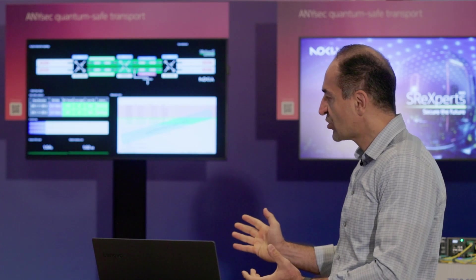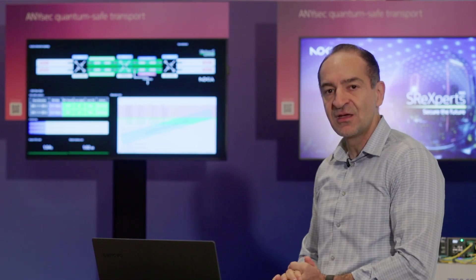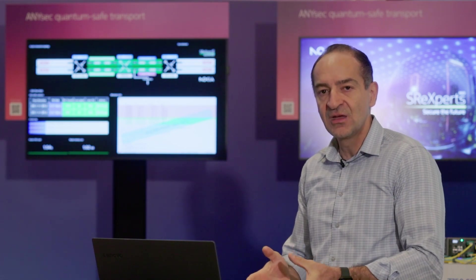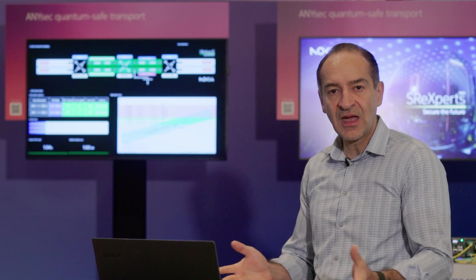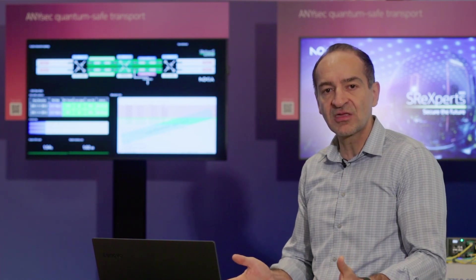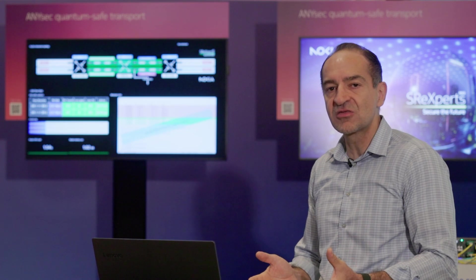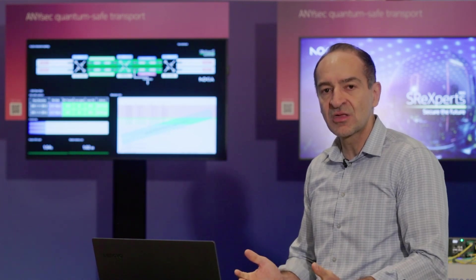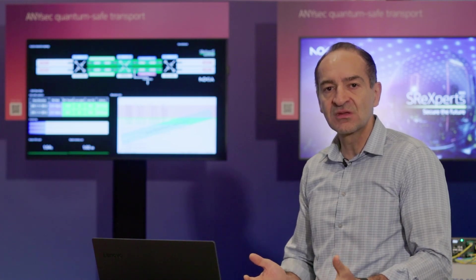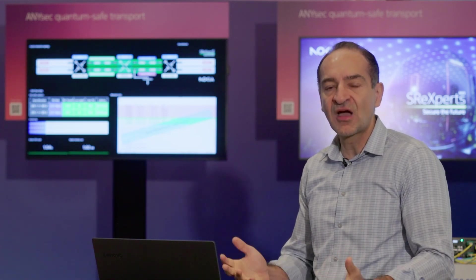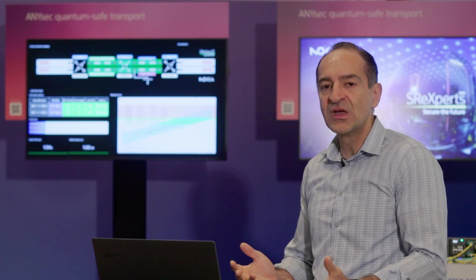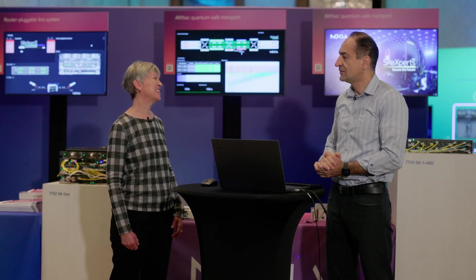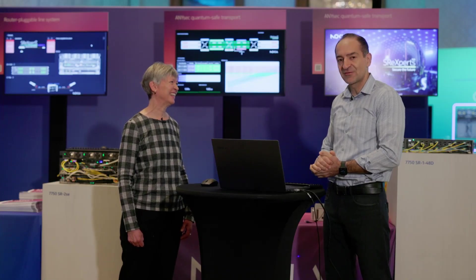This is why Nokia is shining when it comes to security — technology like this can secure the network today with AES-256, and tomorrow these technologies and algorithms can mitigate quantum computers that could otherwise decrypt traffic on low-security networks. Very interesting — thanks so much, Hooman. Thank you very much, and thank you for taking the time.